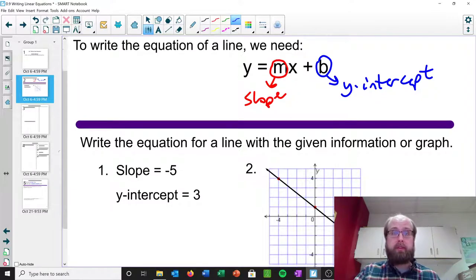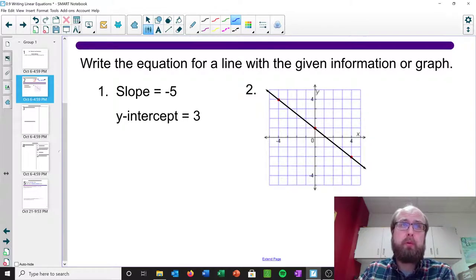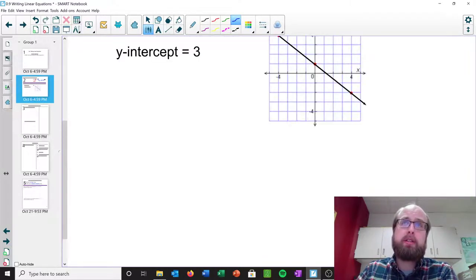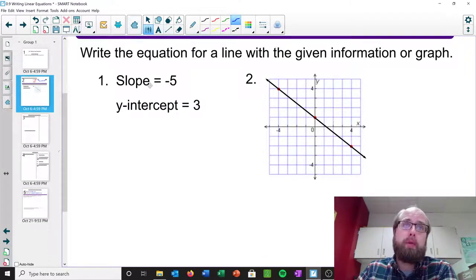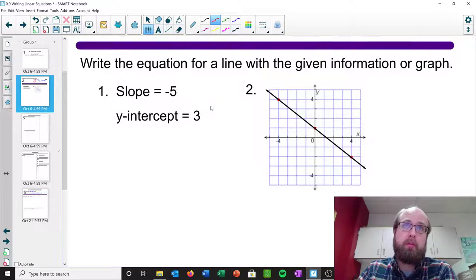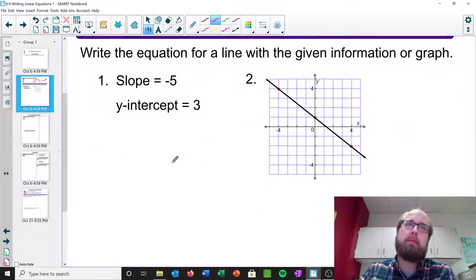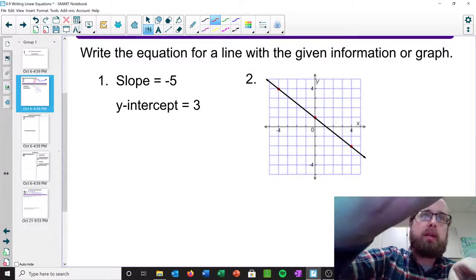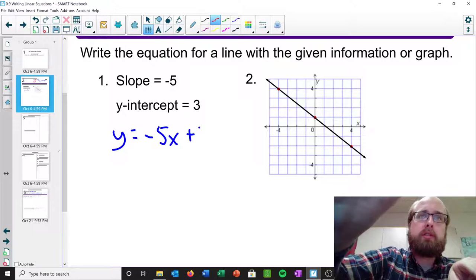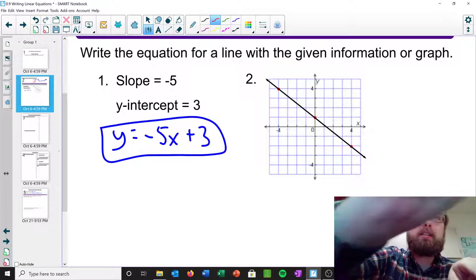So let's look at a couple of examples. The first two are really simple ones, basically ones that give you the slope and the y-intercept. This one literally does. We have a slope of negative 5, a y-intercept of 3. Well, what do we have to do? Just put it into y equals mx plus b. And so that would be y equals negative 5x plus 3. That's the equation of our line.